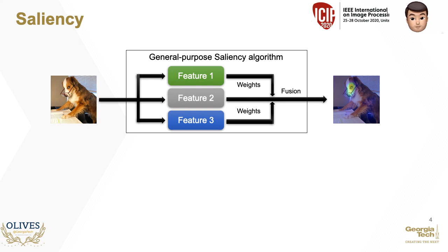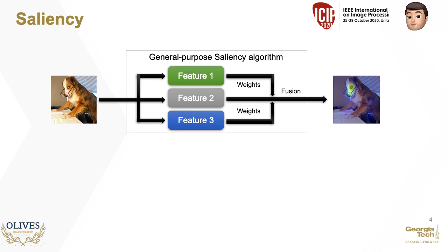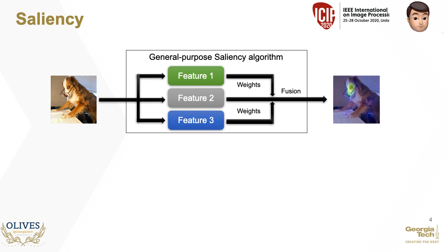Here we show a typical saliency approach. Given an image, certain features that have been neurologically shown to surprise and inform humans are considered. These are then weighted and fused to obtain the final saliency map. No doubt that the dog in glasses is both adorable and surprising, which holds the attention of humans, hence making it salient.